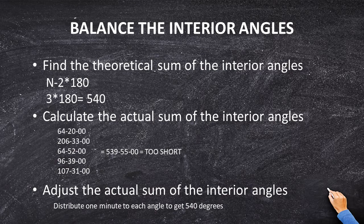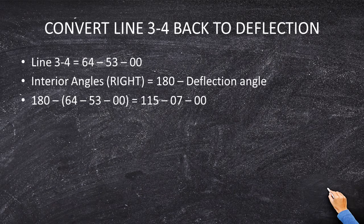Let's take all of our numbers and add 1 minute to each one. Once we've done that, our interior angles sum to a perfect 540°. Now we need to take line 3-4, which currently has a corrected interior angle of 64°53'00", and convert that back to a deflection angle.